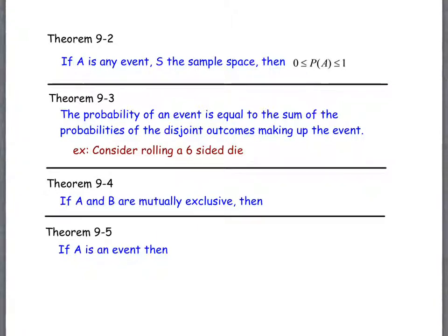If the events A and B are mutually exclusive, then if you want the union of the two events happening, it's the individual events added together. So in order to find the probability of rolling a three or a four, it means that I can find the probability of rolling a three and add it to the probability of rolling a four.